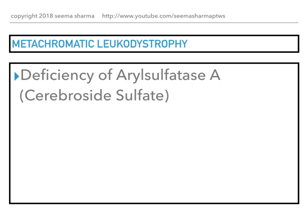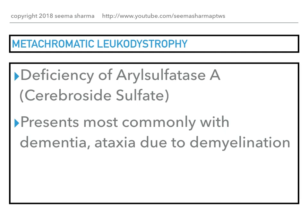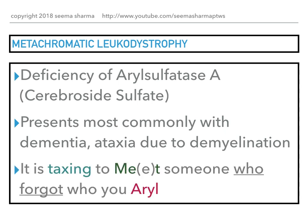Metachromatic leukodystrophy is caused by deficiency of arylsulfatase A, which causes accumulation of cerebroside sulfate. The clinical presentation includes dementia and ataxia, due to demyelination that is both central and peripheral. My way of remembering this is: 'It is taxing to meet someone who forgot who you are all.' Taxing is for ataxia, met or meet is for metachromatic, someone who forgot helps you remember dementia, and 'arl' is for the deficient enzyme arylsulfatase A.